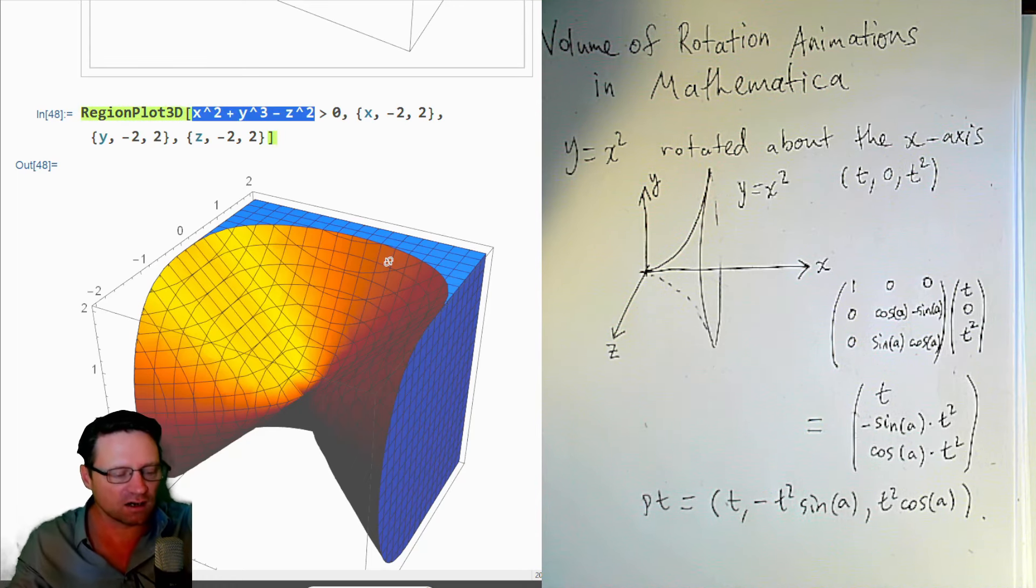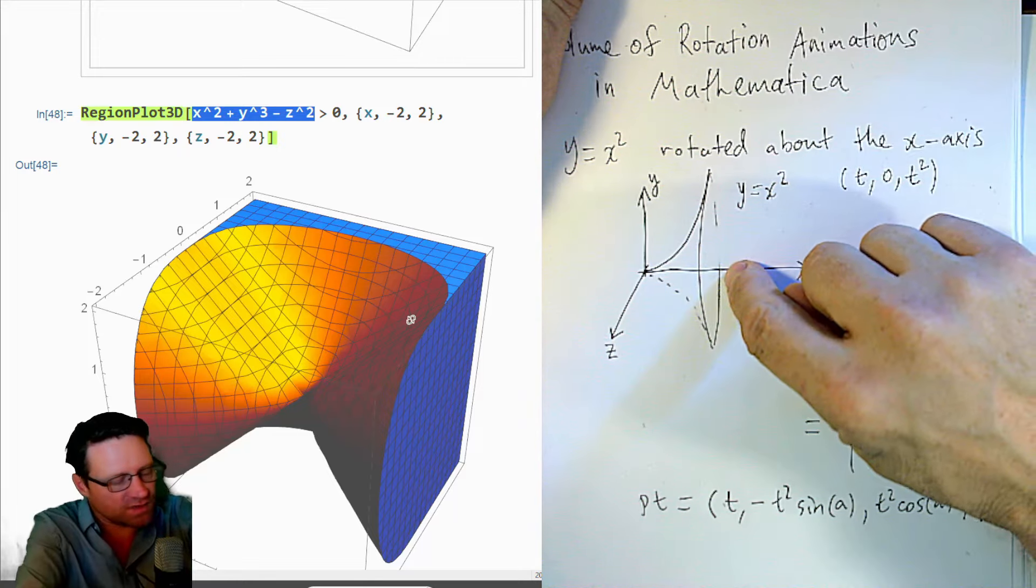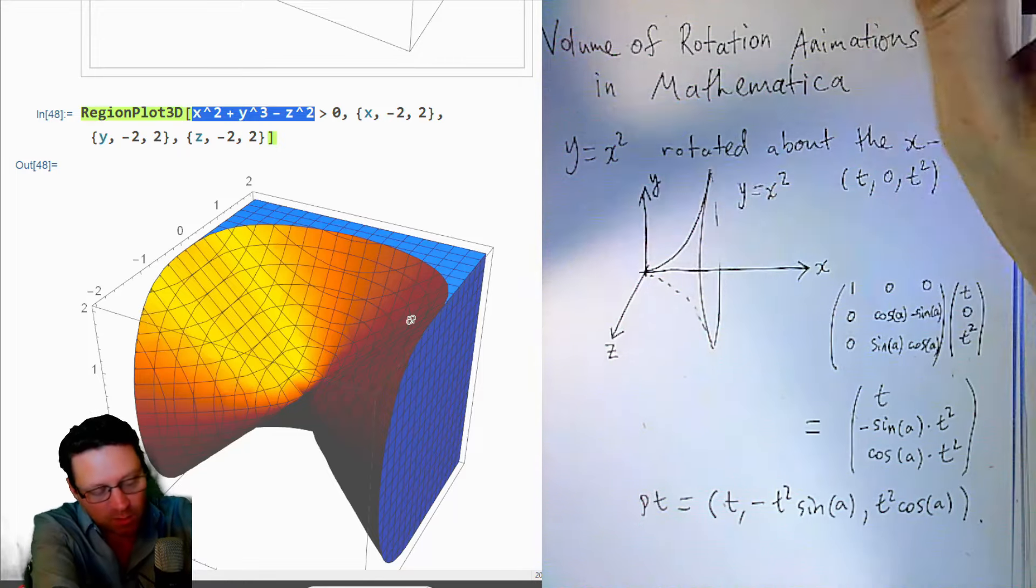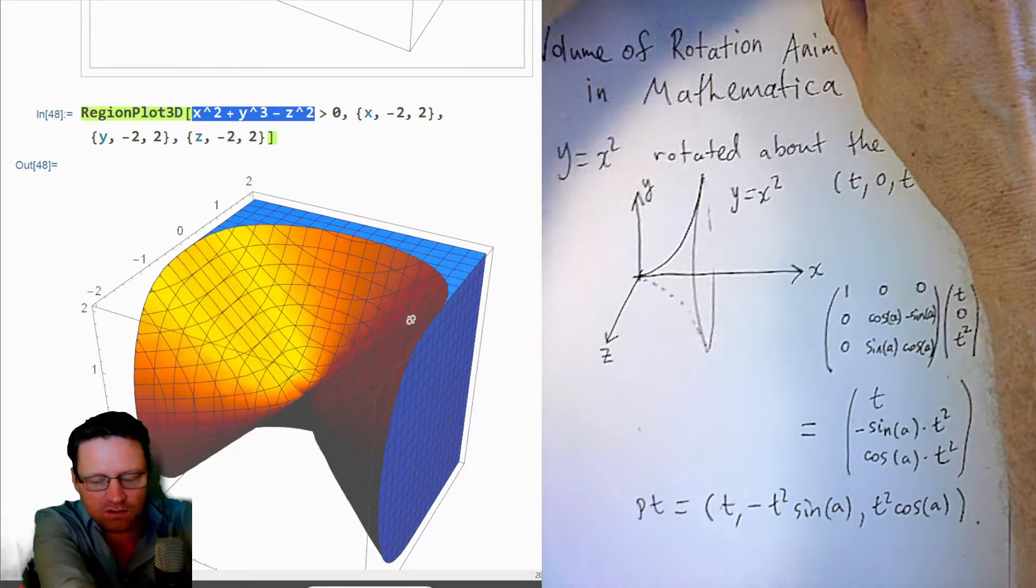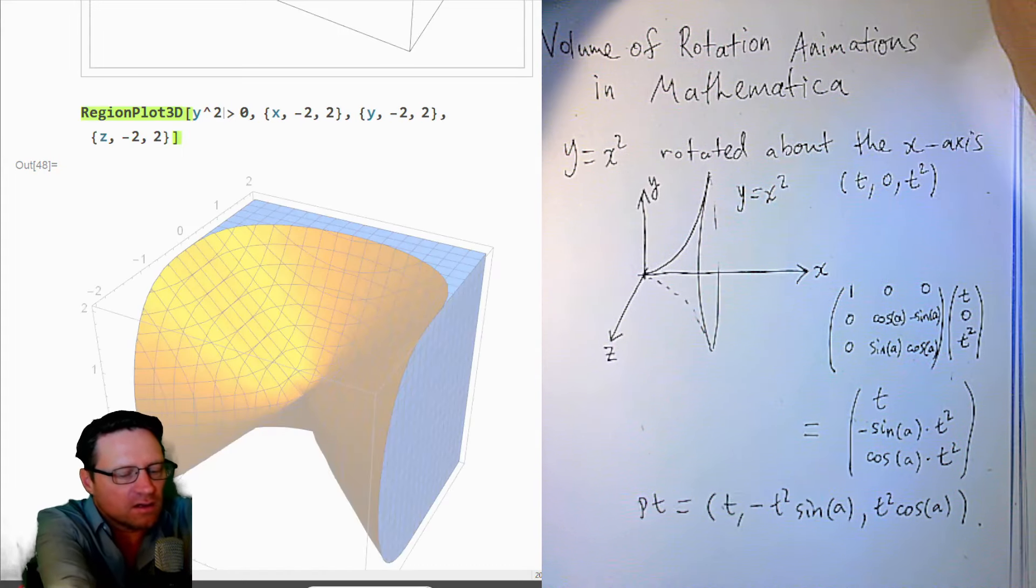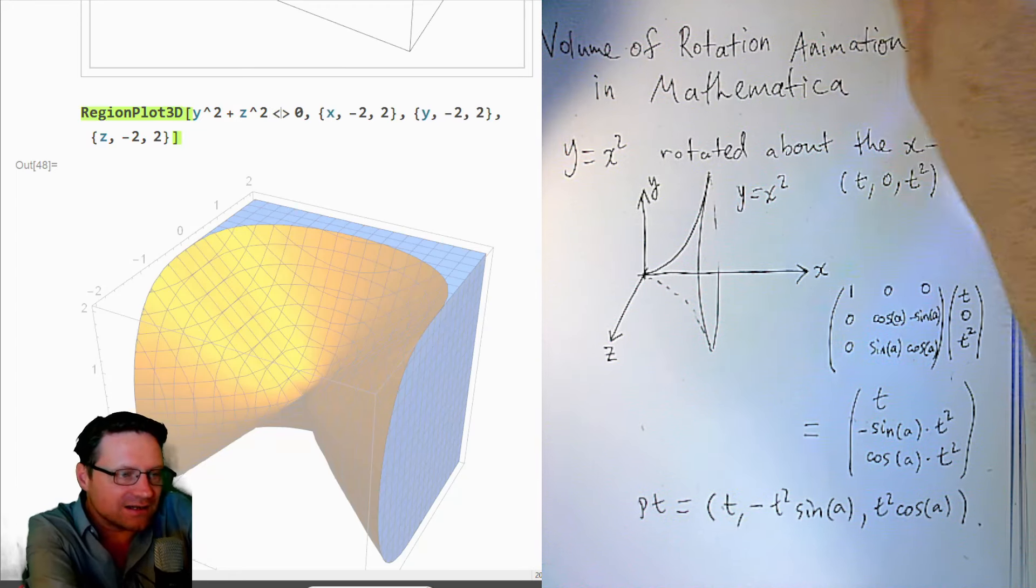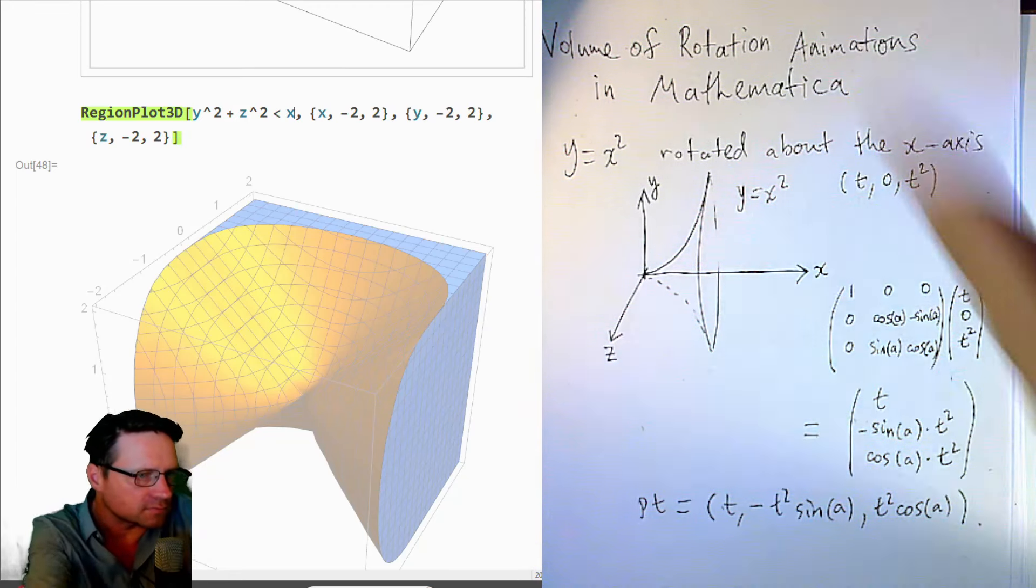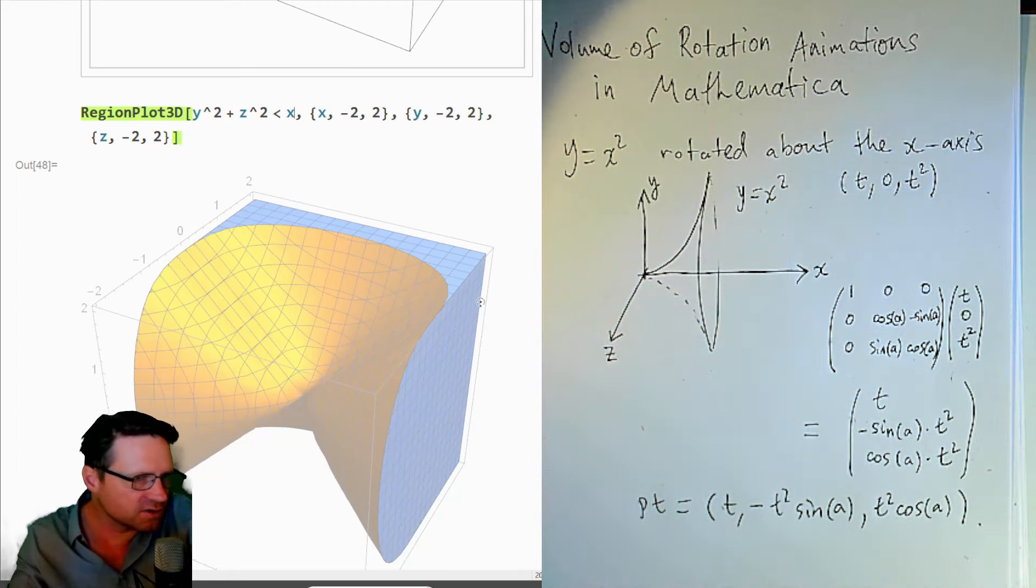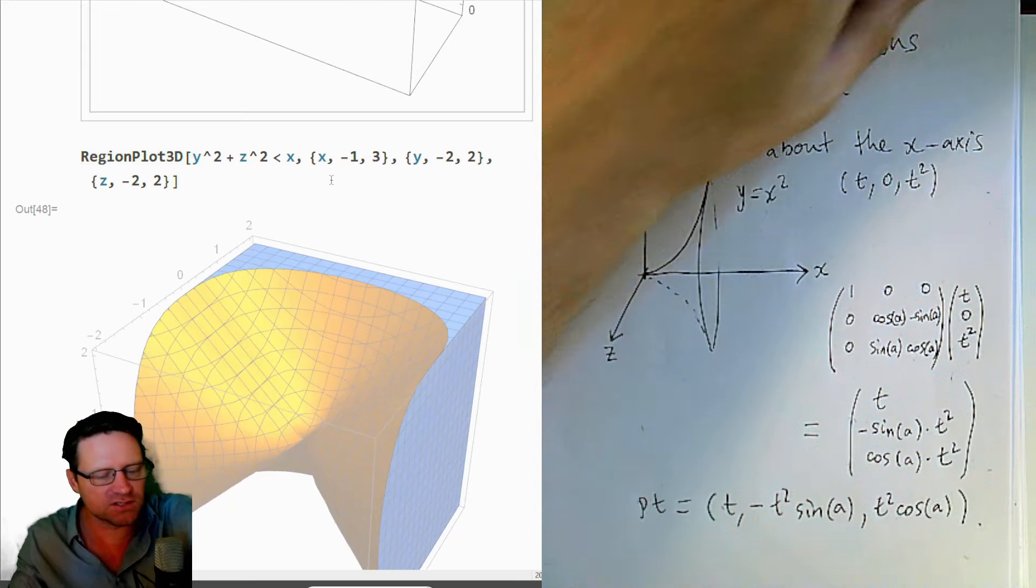But what we want to do here is change this region to plotting a region associated with this curve, right? And but we want to do this in 3D. So that would be y squared plus z squared is less than x and now we want to do this as x goes from minus 1 to 3. So let's just try this here.